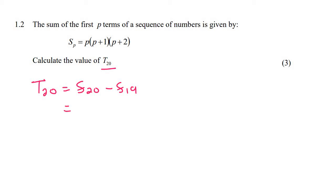So the sum of the first 20 - let me do this as a little side calculation - the sum of the first 20 would be equal to, so you just plug in 20 in the place of P. So it'll be 20, 20 plus 1, 20 plus 2. And on the calculator that'll give us 9,240.